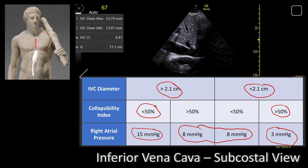In this particular patient, the maximum IVC diameter is 23 mm, which falls into the greater than 2.1 cm category, and the collapsibility of the IVC is 40 percent, which is less than 50 percent. So the right atrial pressure in this patient is 15 millimeters of mercury.